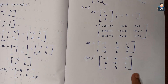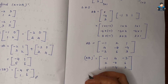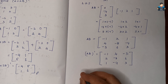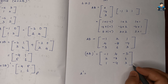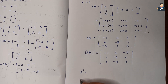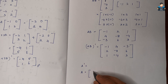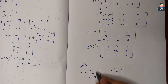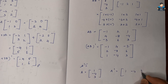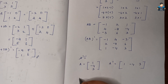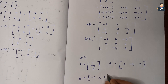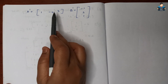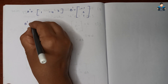LHS is complete. Now RHS part: we find Bᵀ and Aᵀ. A = [1, -4, 3]ᵀ (3×1 column matrix), so Aᵀ = [1, -4, 3] (1×3 row matrix). B = [-1, 2, 1] (1×3 row matrix), so Bᵀ = [-1, 2, 1]ᵀ (3×1 column matrix). Now we compute Bᵀ × Aᵀ.